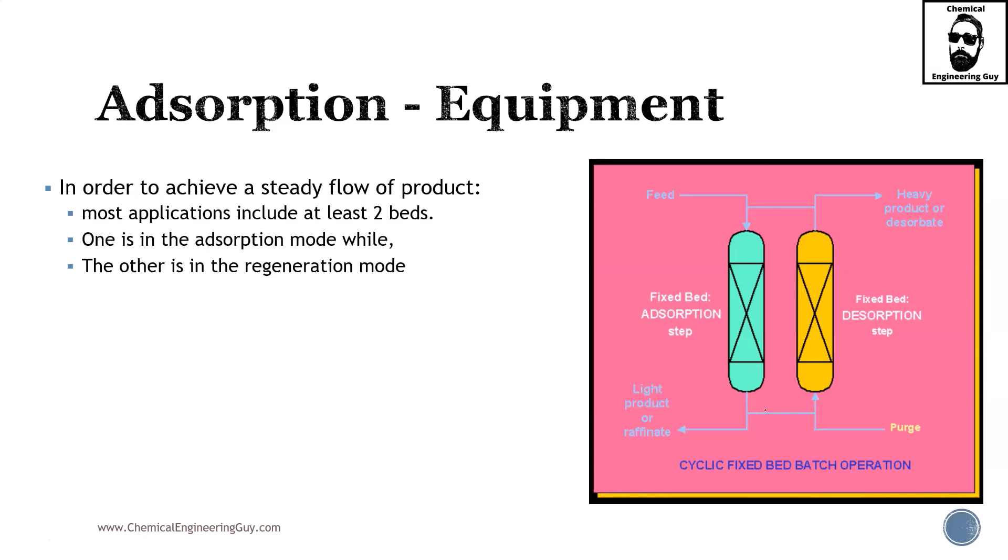In order to achieve a steady flow of products, most applications typically include two beds. One will work in a certain process and the other in the reverse process. We do this to avoid the straightforward approach where we work, then it gets saturated, then we get a material which desaturates or desorbs the material, and then we work again. This takes time and we would be working very batch mode. We want to work the most continuously way as possible and this fixes our problem.